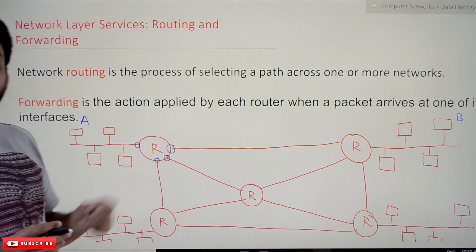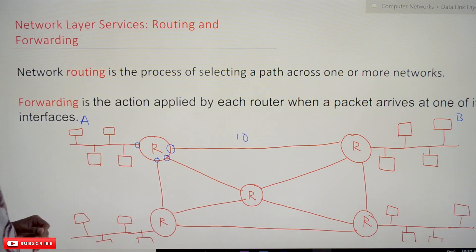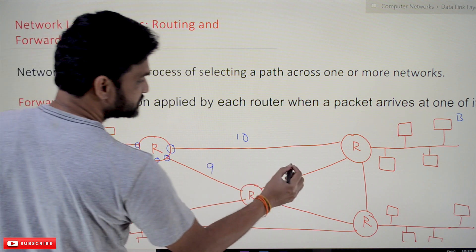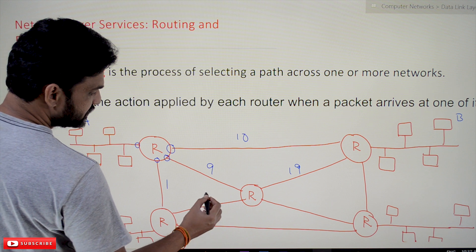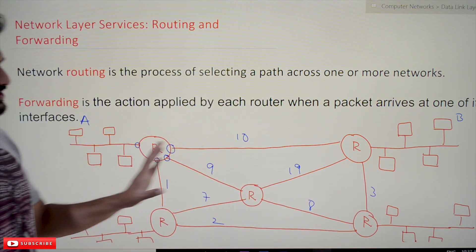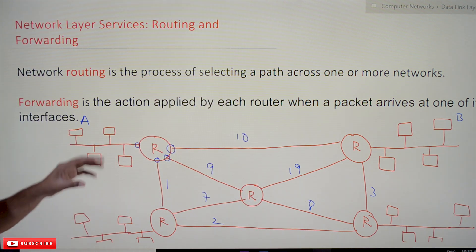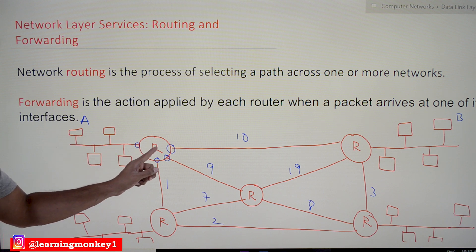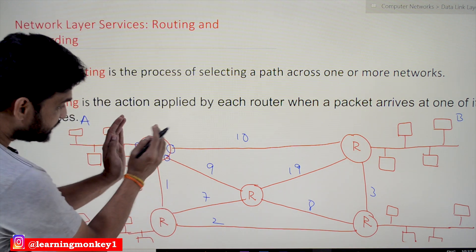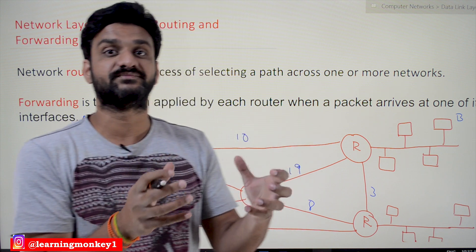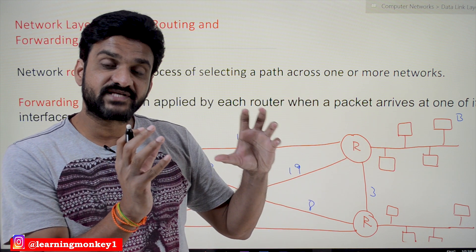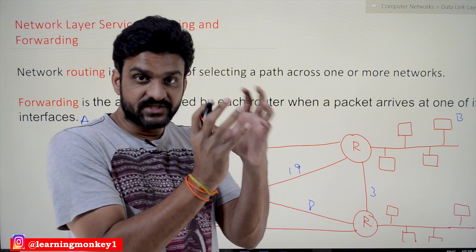The challenge is: which path should be taken? Assume the distance between these two routers is 10 kilometers, this one is 9 kilometers, this is 19 kilometers, and others are 1, 7, 2, 3, and 8 kilometers. These are the distances between each and every router. The packet received at this router must choose which line to take — and that is the job of the routing algorithm. Each router runs some algorithms, and there are different types of routing algorithms we will discuss in later videos.